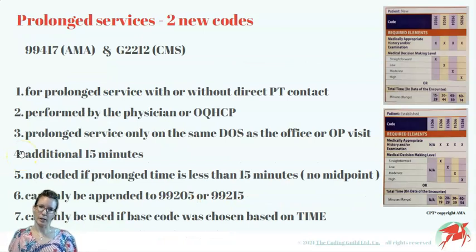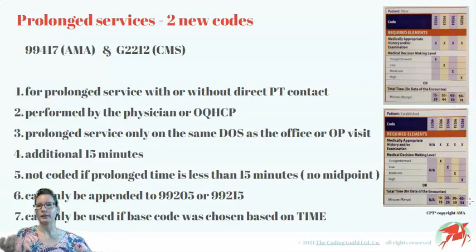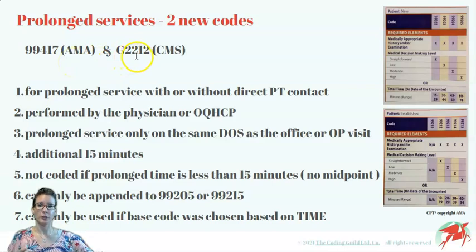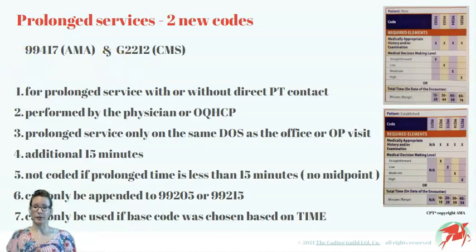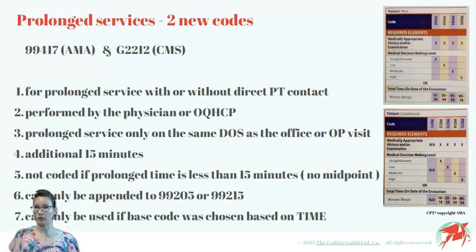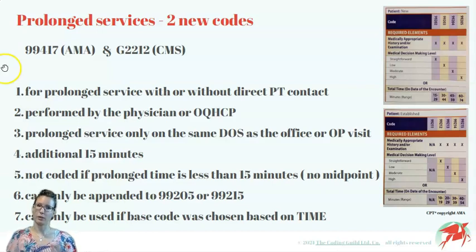When leveling based on time, there is only so much we can work with before the time will max out. And for these situations, we have two new prolonged services codes. One of them, 99417, was created by the AMA, while the other, G2212, was established by CMS. These codes are almost identical in their use. Both of them describe prolonged services with or without direct patient contact. Both must be performed by the physician or other qualified healthcare professional. Both of them are used only on the same day of service when the office or other outpatient visit takes place. Both are used to report an additional 15 minutes of prolonged service time.